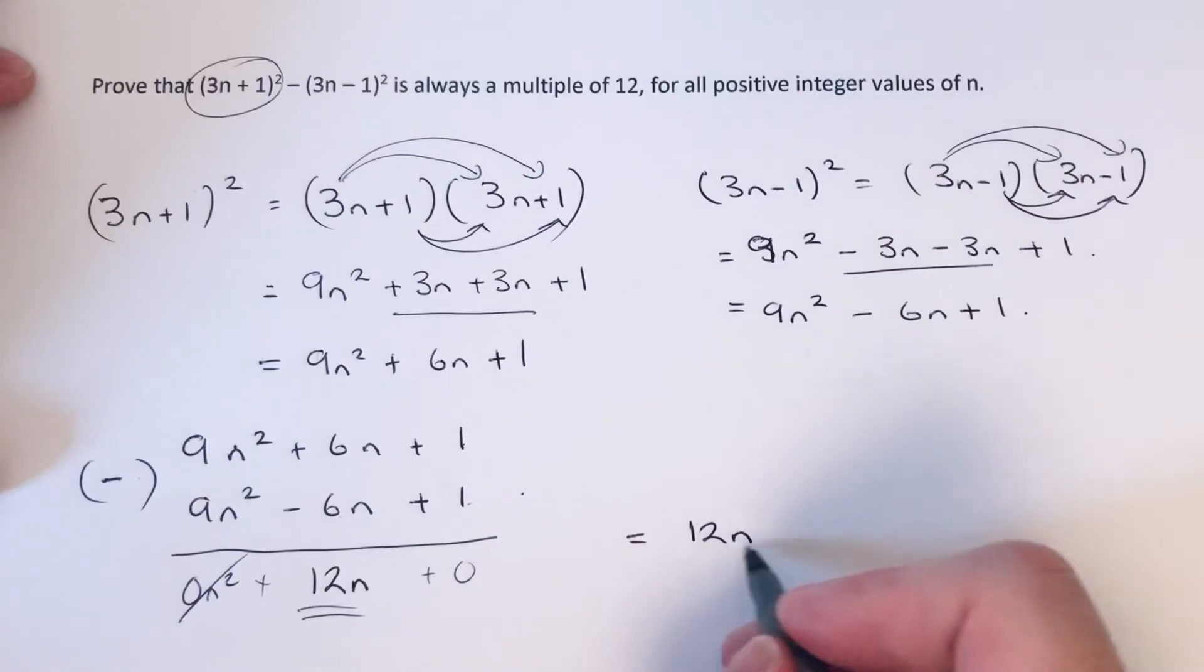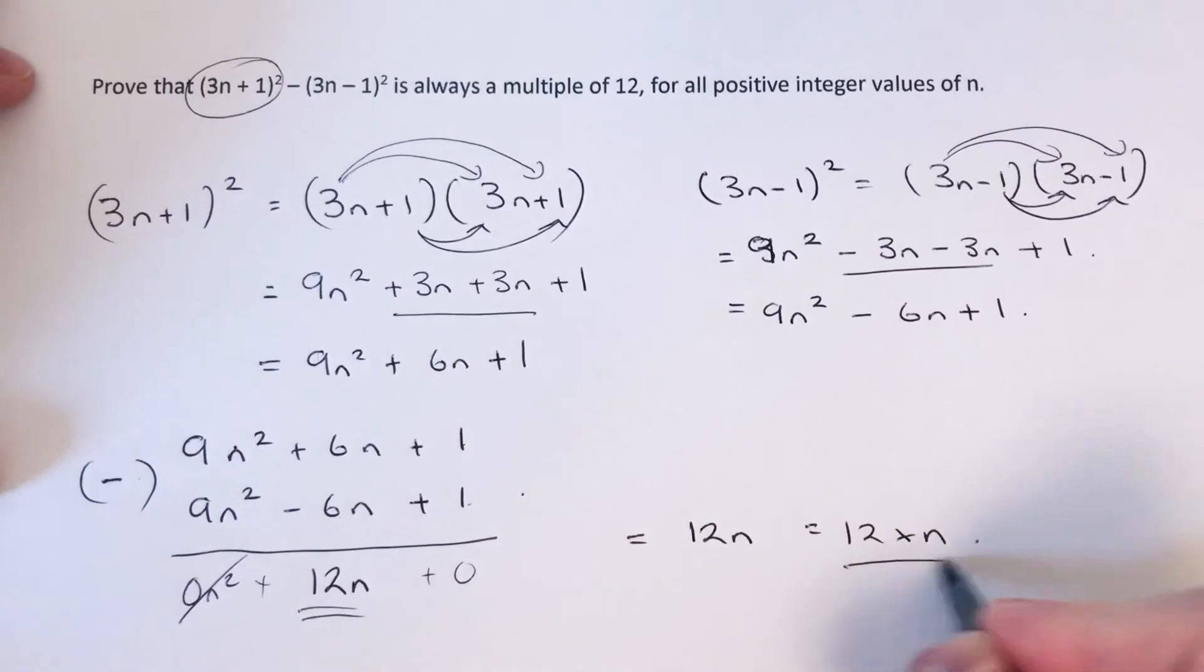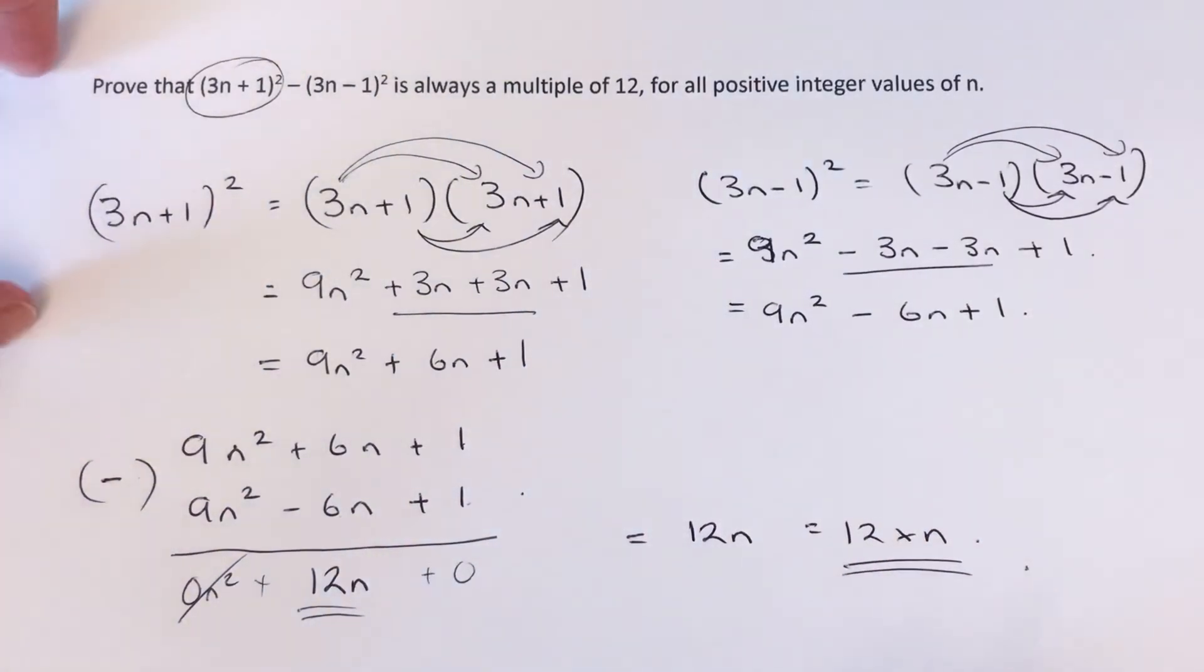Since our number here is a multiple of 12, this proves that 3n plus 1 squared minus 3n minus 1 squared is always a multiple of 12. If you like this video, make sure you like and subscribe, and I'll see you next time. Bye-bye.